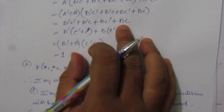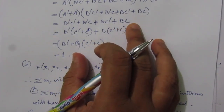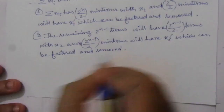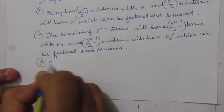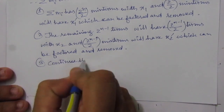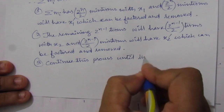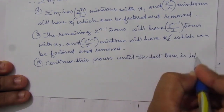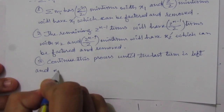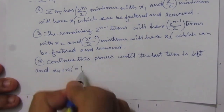After finding these 2^(n−1) terms — in this case 2^(3−1) = 4 number of terms — step 3 is to continue this process until the last term is left, and xn + x̄n will equal 1.